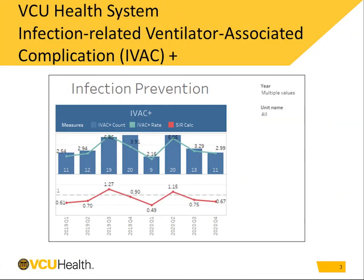This table shows the last two years of trended data for infection-related ventilator-associated complications, abbreviated as IVAC Plus, at VCU Health. The blue bars represent raw numbers of IVACs in three-month intervals. The teal line shows the calculated rate, which is the number of IVACs over the number of ventilator days, times 1,000. The red line shows the standardized infection ratio calculation, or SIR.